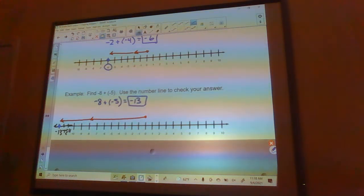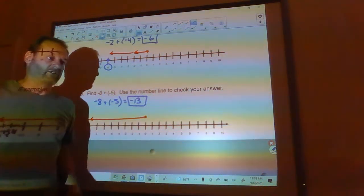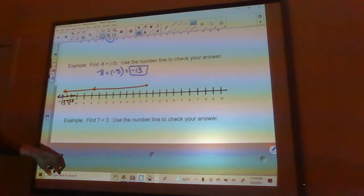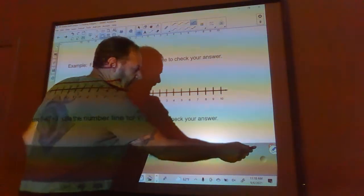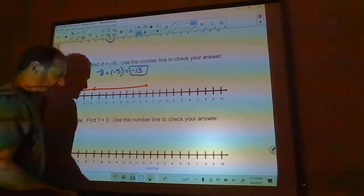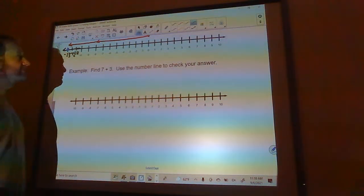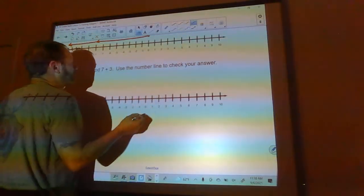So negative 8 plus negative 5 is negative 13. Piece of cake using the arrows. Now if you don't have to use the arrows, you don't have to use the number line if you don't need to, but it's a nice little tool that will help you out.